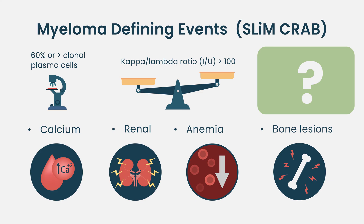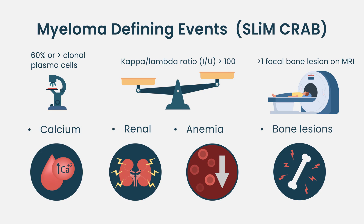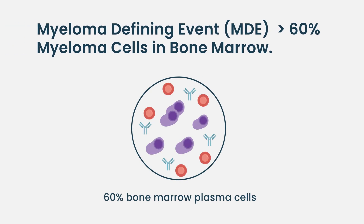The final myeloma-defining event is MRI lesions. When we do an MRI, if we see more than one focal lesion — each measuring five millimeters or more — it is considered a myeloma-defining event. In summary, we have the CRAB criteria plus these three myeloma-defining events: 60% clonal plasma cells, an involved-to-uninvolved free light chain ratio greater than 100, and more than one focal lesion on MRI.